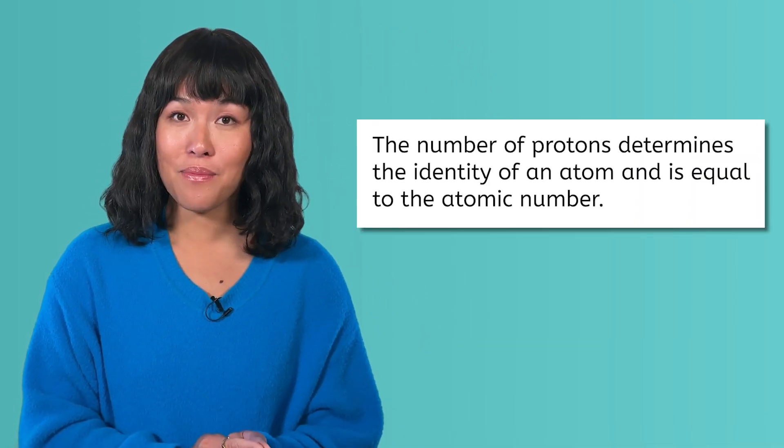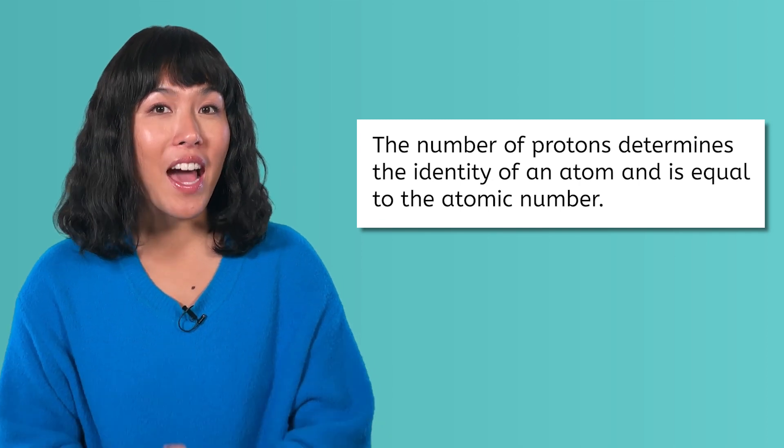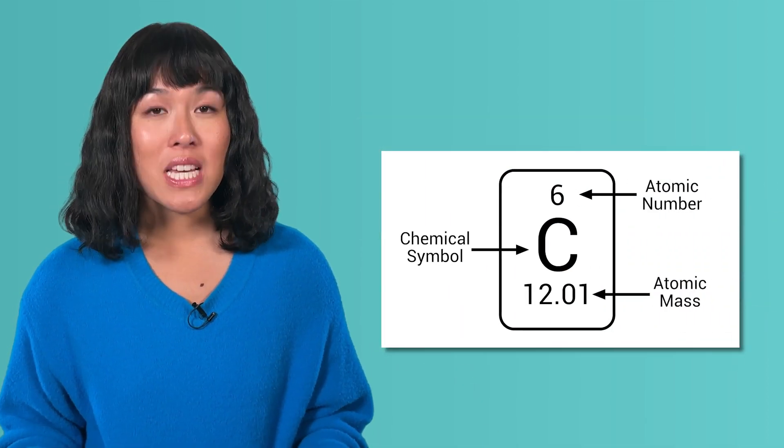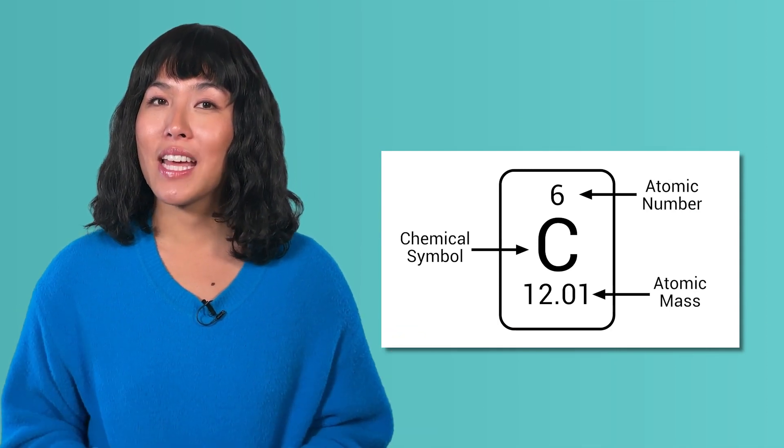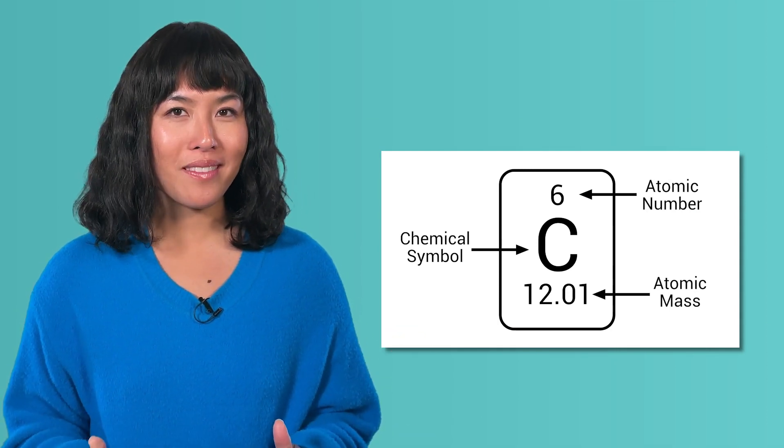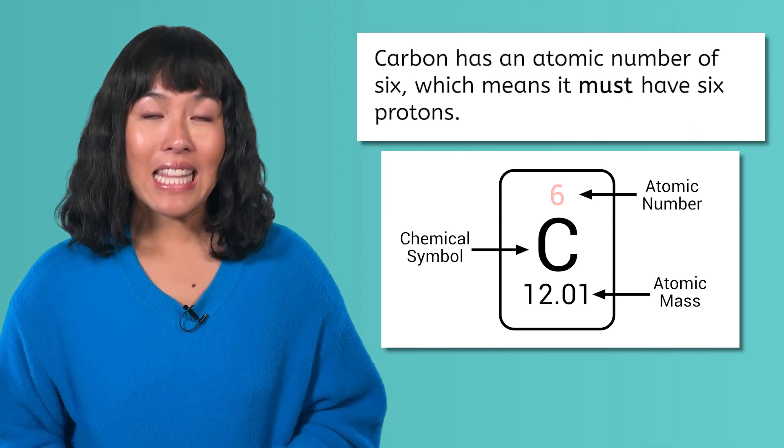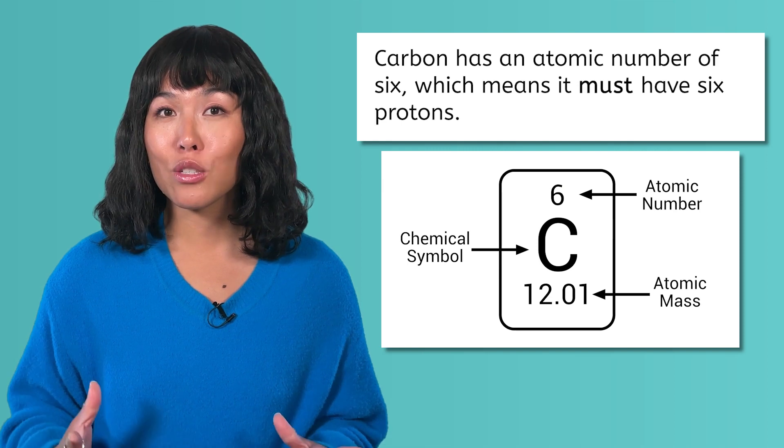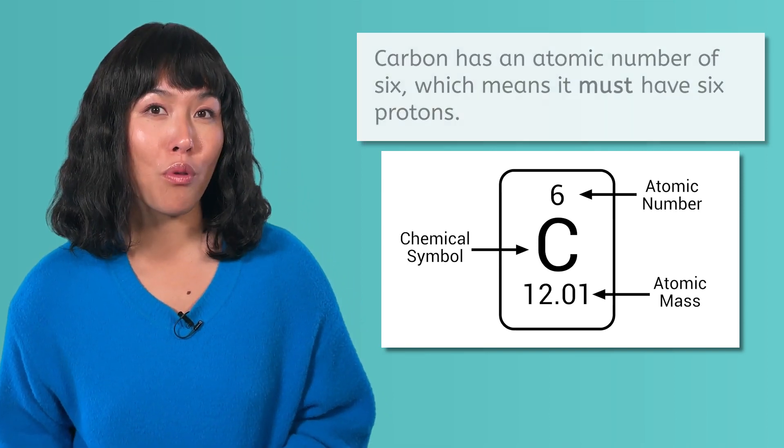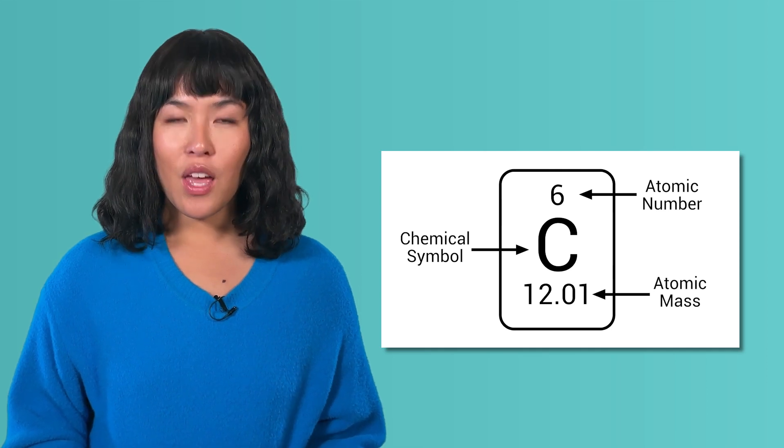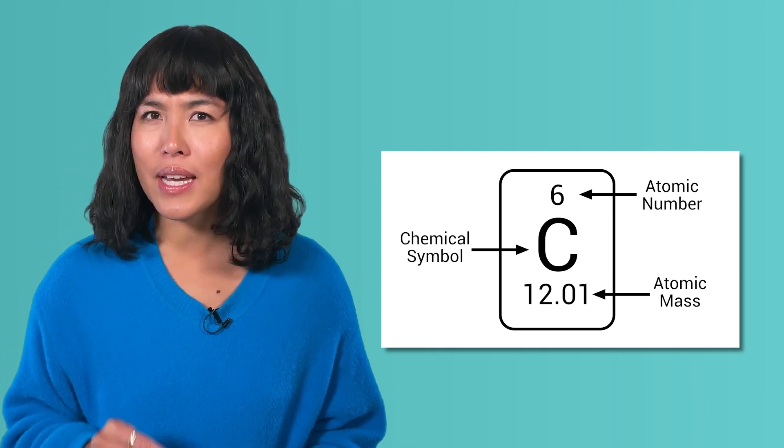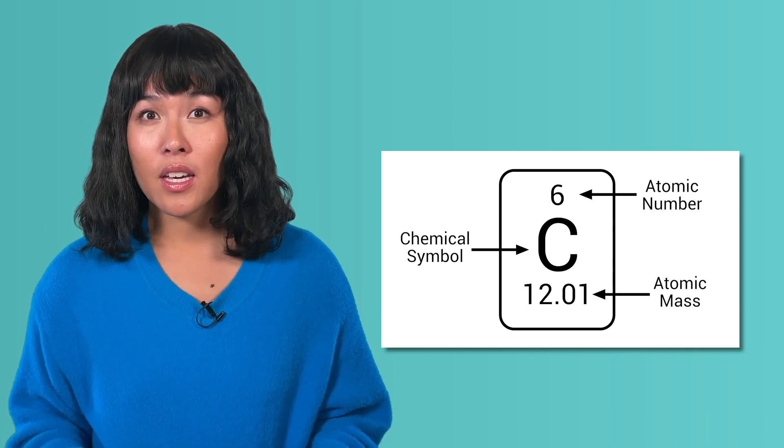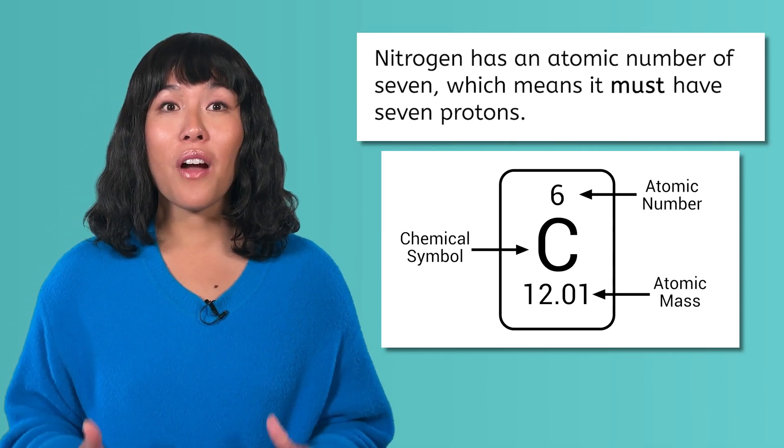If you remember back to our previous lesson discussing the structure of the atom, you will remember that the number of protons present in an atom determines the identity of that atom. And this number, the atomic number, is the whole number found on the periodic table. For example, carbon has an atomic number of six. This means that every atom of carbon has six protons. If you change the number of protons, you change the element. If you somehow added a proton to a carbon atom, you no longer have carbon. You have nitrogen with an atomic number of seven.